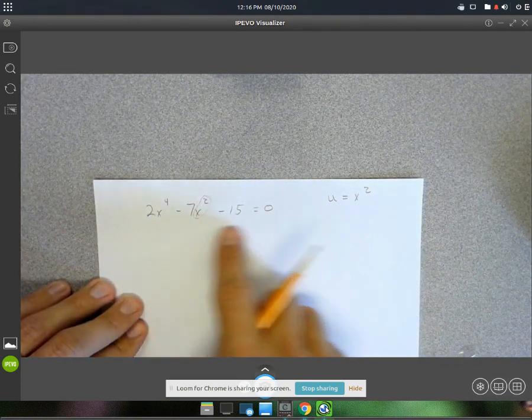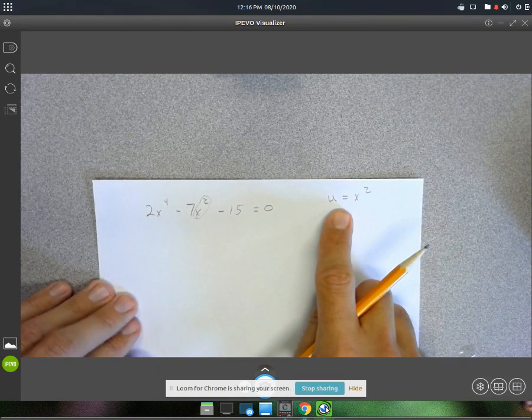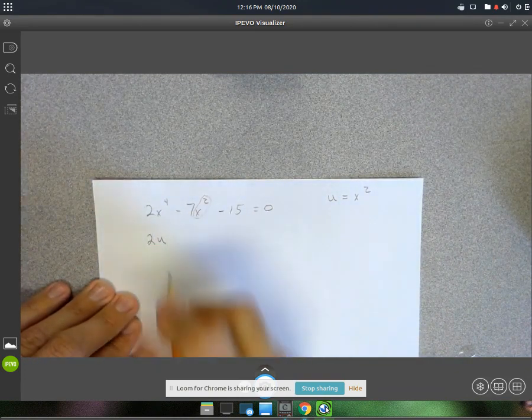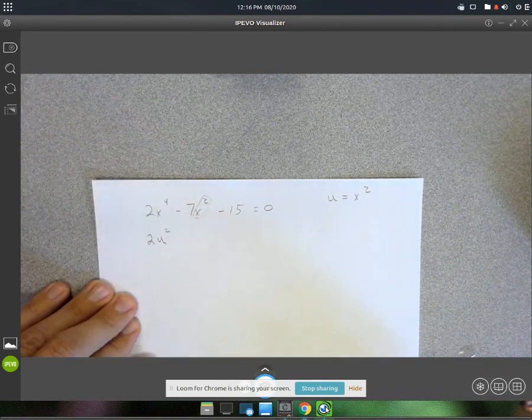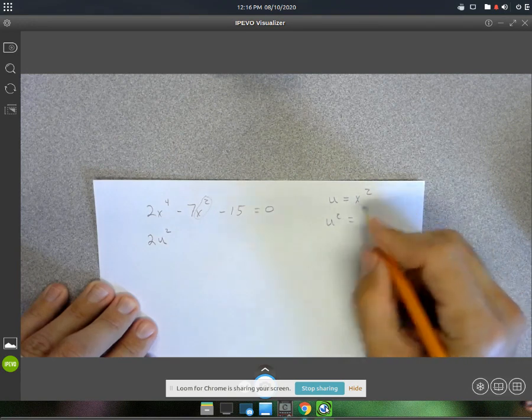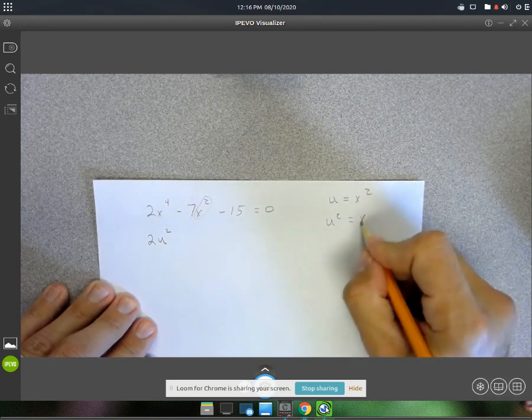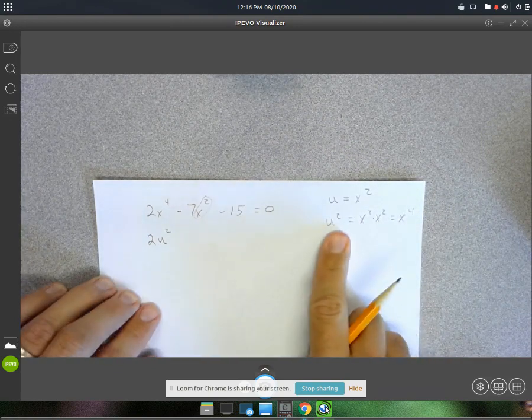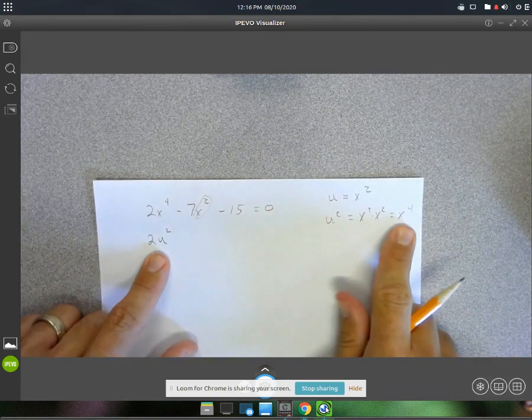And then we're going to rewrite this in terms of u. So it's going to be 2u. Instead of to the fourth power, it's going to be to the second power. The reason why, if you look at u squared here, that just means you're squaring this. So x squared times x squared will be x to the fourth. u squared is my x to the fourth.